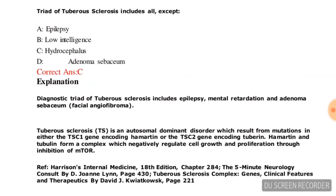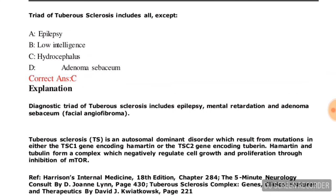Next question: the triad of tuberous sclerosis includes all except — options are epilepsy, low intelligence, hydrocephalus, or adenoma sebaceum.